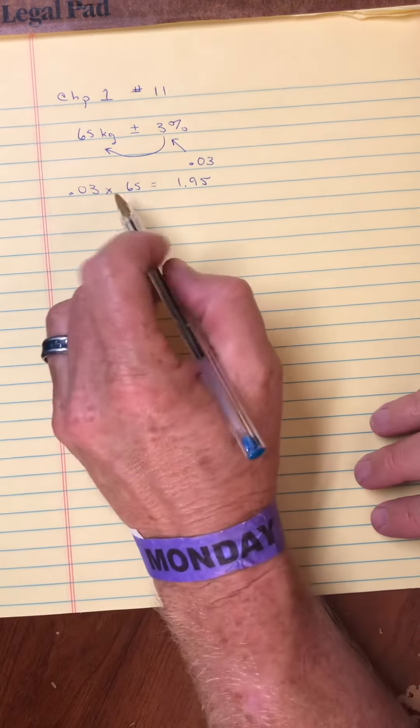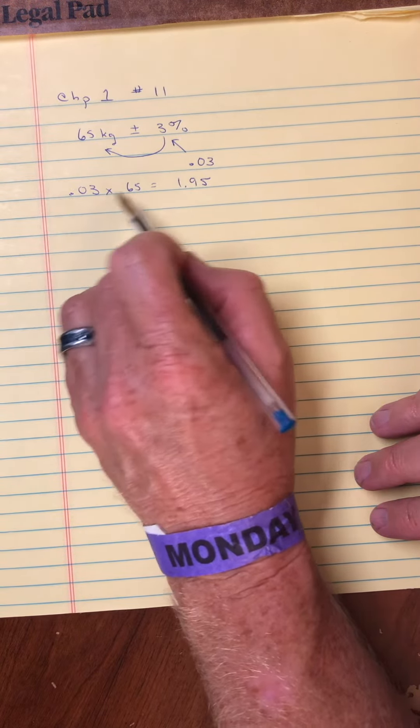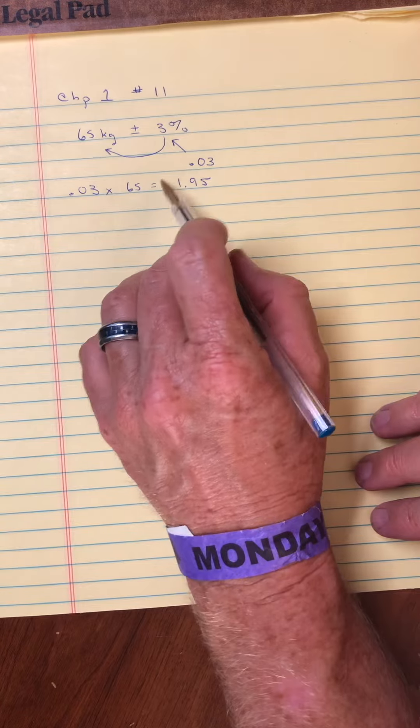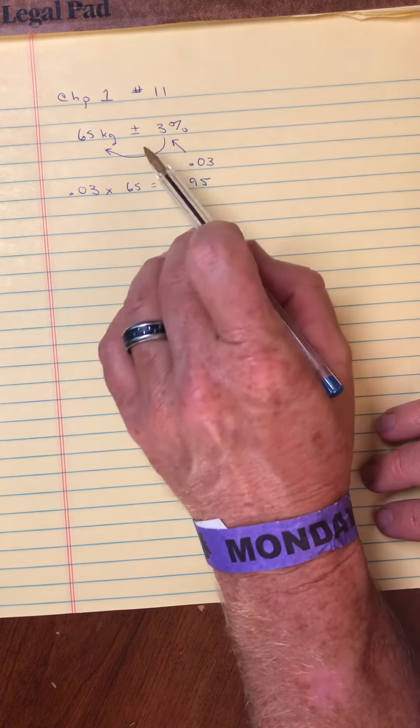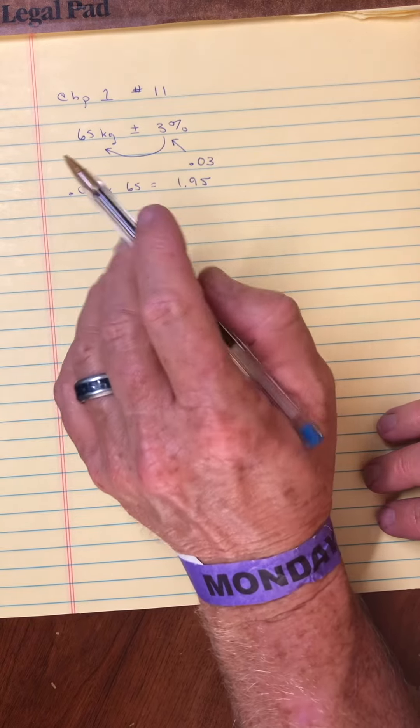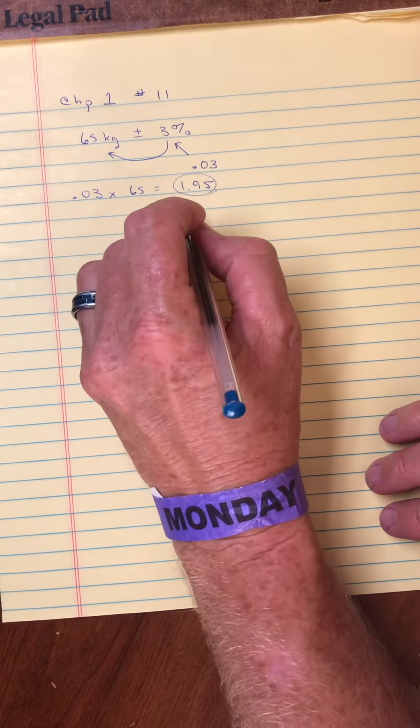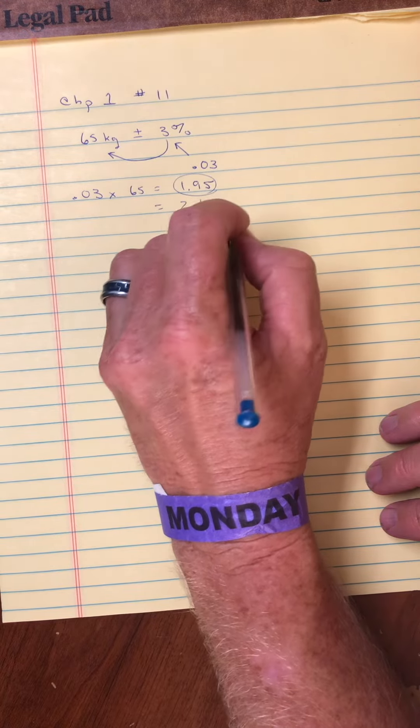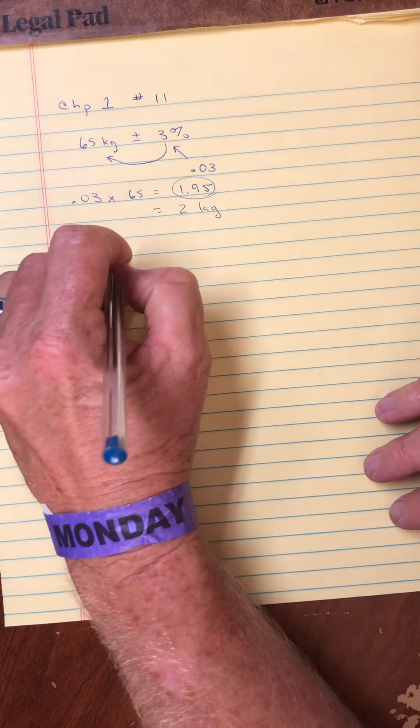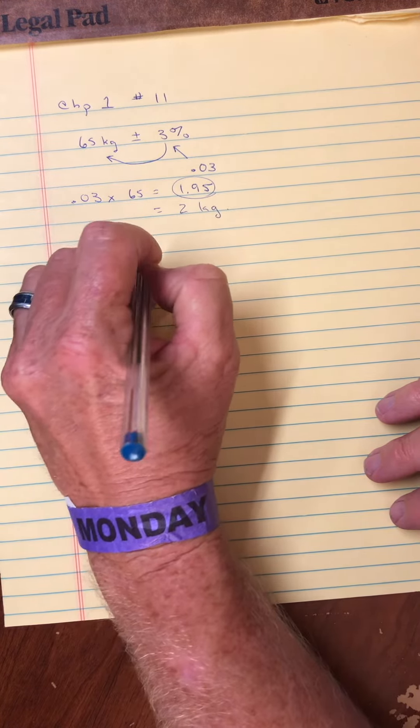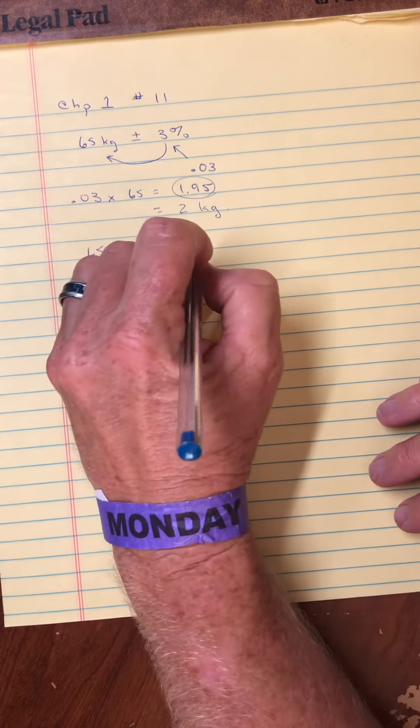Now, again, we should probably ask, how many significant figures really are here? Because what do we mean by 3%? Is it 3% and I don't know? Probably. So really, we're looking at just one significant figure. So this is probably just 2 kilograms. So the best way to answer this is to say it's 65 kilograms plus or minus 2 kilograms.